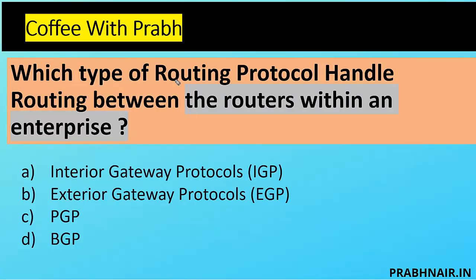The first question is: which type of routing protocol handles routing between the routers within an enterprise? So they're talking about routing within the enterprise. We have four options: Option A - IGP, Interior Gateway Protocol; Option B - Exterior Gateway Protocol; Option C - PGP, which is actually Pretty Good Privacy used for email security; and Option D - Border Gateway Protocol.